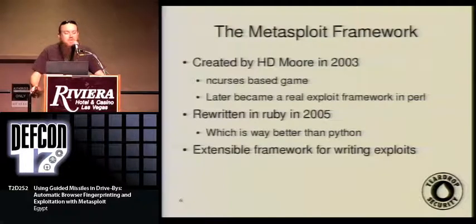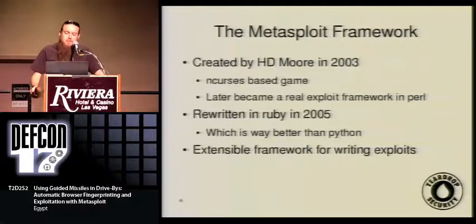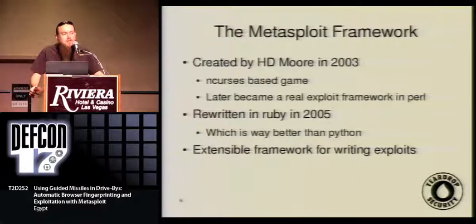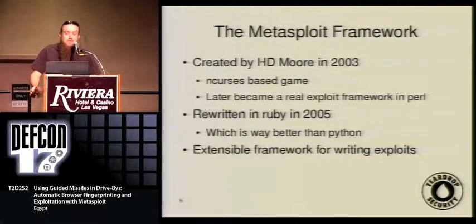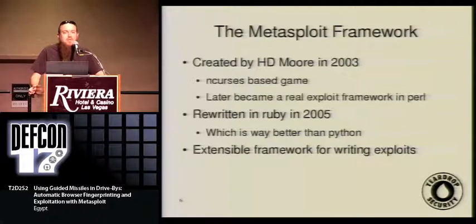Originally Metasploit was a game — a cursus-based game you could play anywhere. It later became a full-fledged exploitation framework written in Perl, but Ruby is a lot better. So in 2005, HD and the core dev team — Scape and Spoonm — rewrote the whole thing in Ruby, which of course is way better than Python. It's an extensible framework — more than just using exploits — and there's a lot of non-exploit tools available within Metasploit.